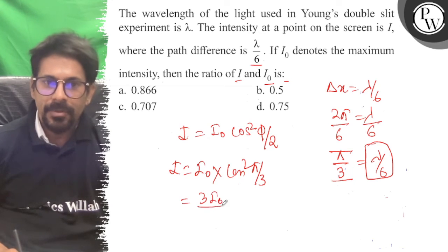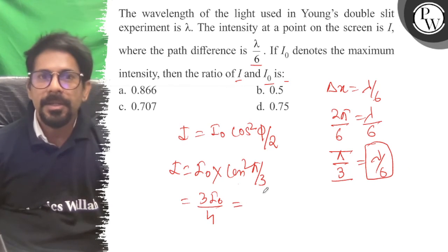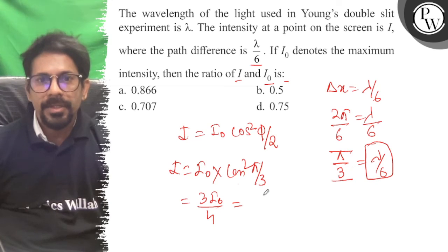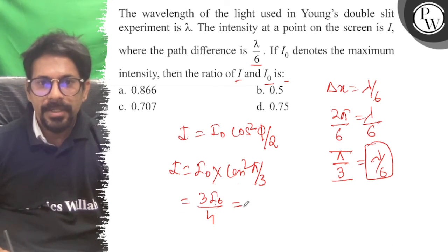it becomes 3 I₀ by 4. I by I₀, the ratio is 3 by 4.